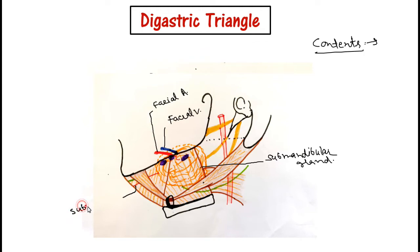We also have the submental artery, myelohyoid nerves and vessels, and the submandibular lymph nodes.